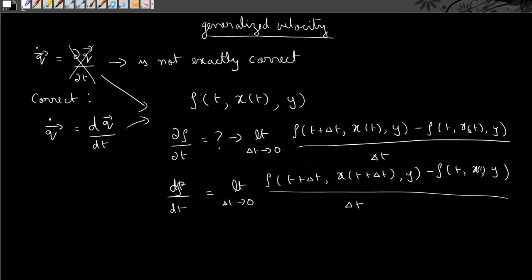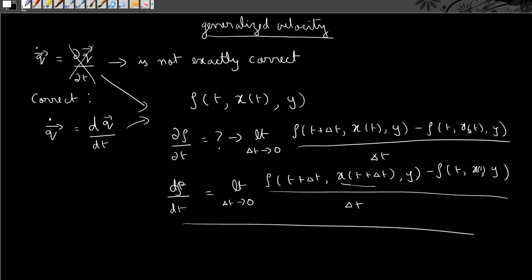So there is a clear difference between the two. Here we also take into account how the variable which in turn depends on time also changes when the time is incremented by Δt, whereas we do not take into consideration this implicit dependence over here. Here we only notice the explicit time dependence.